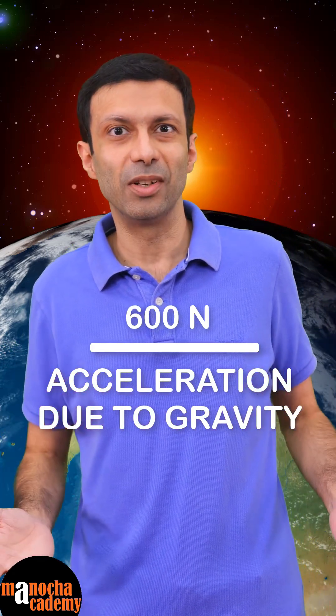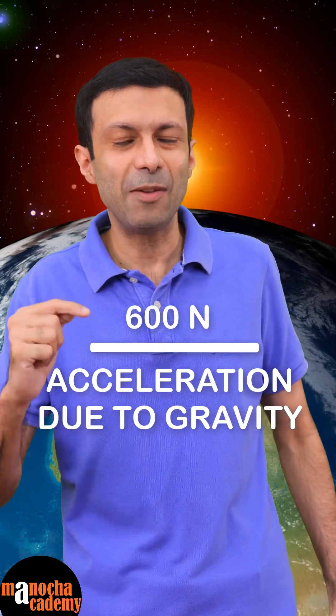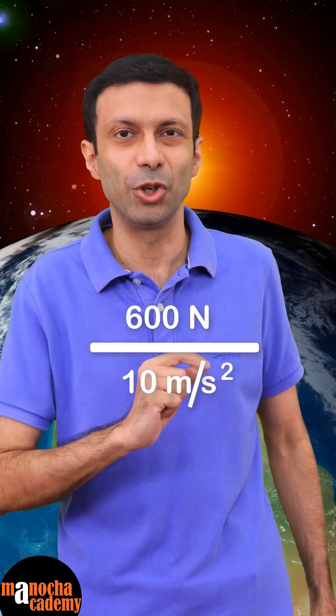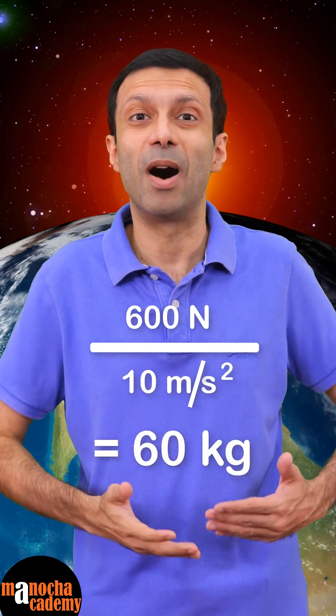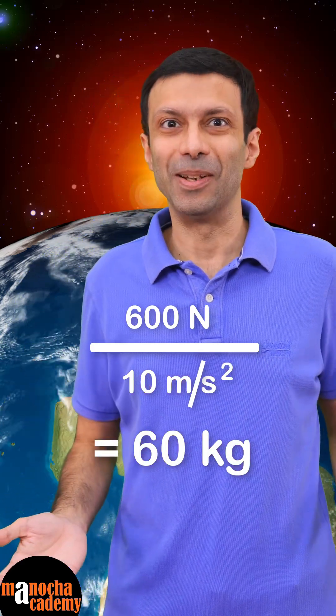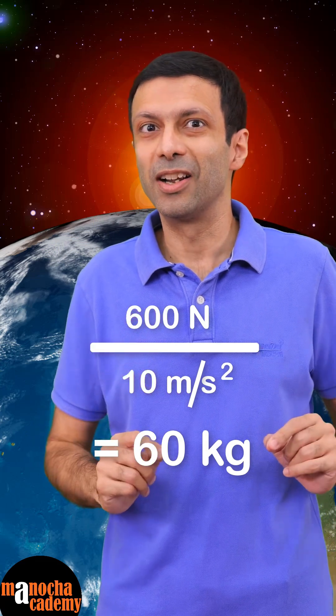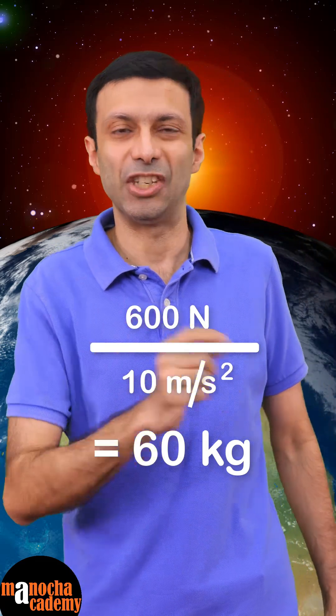And the weighing machine divides by 10 meters per second squared, the acceleration due to gravity, and so gives me the mass as 60 kg. That's how these weighing machines work to give us the mass in kgs.